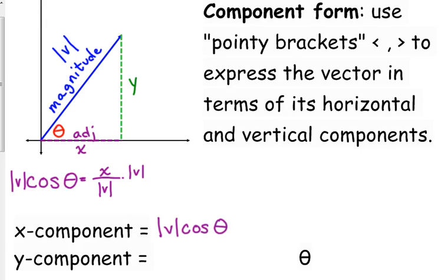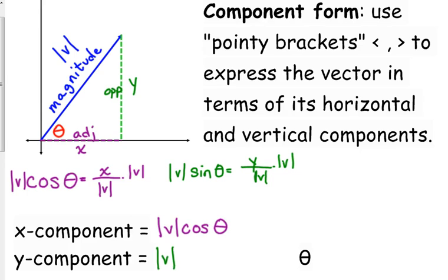You will be given the magnitude and the angle, and you'll need to break it into components. Now, the vertical component — the y — is opposite our angle, so we would use sine. Sine of the angle equals y over the magnitude. Similarly, we can find the y component by multiplying the magnitude by the sine of the angle.